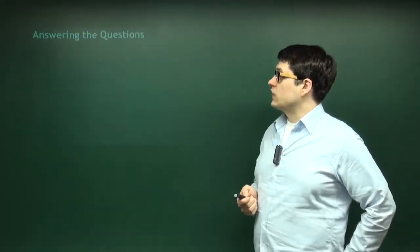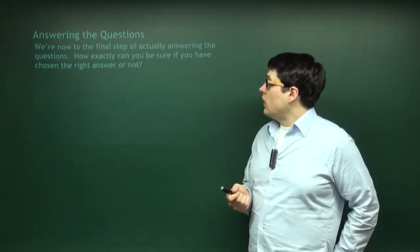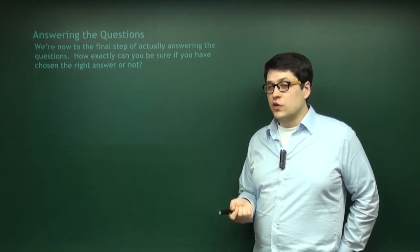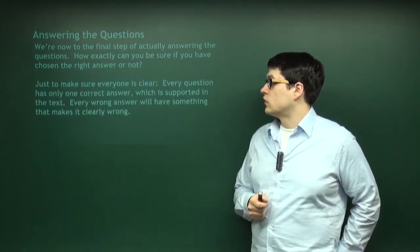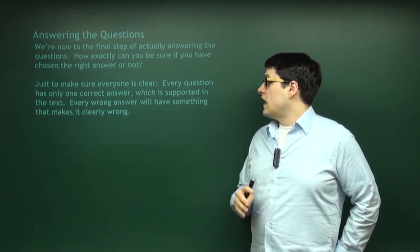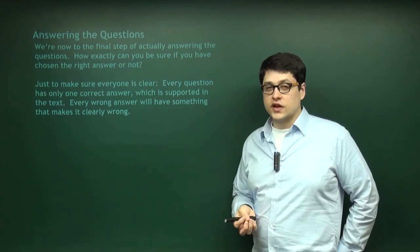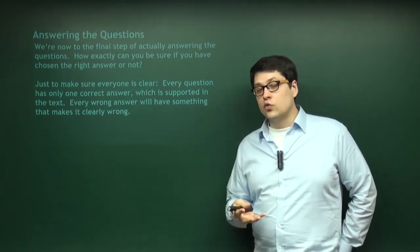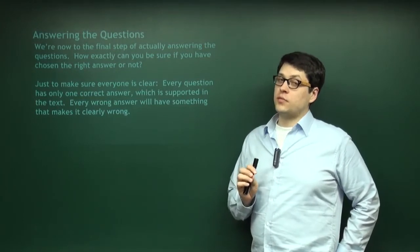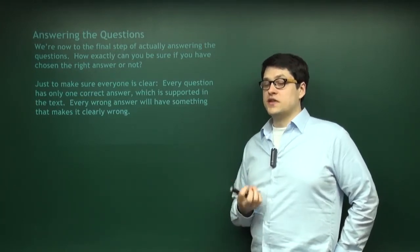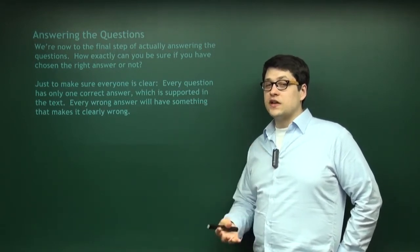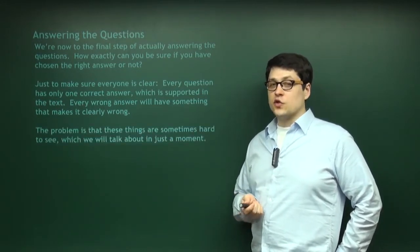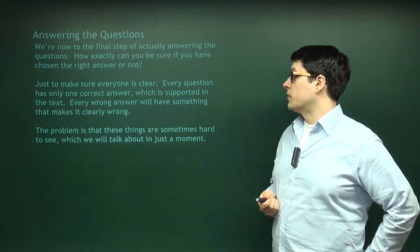Okay, the next step: actually answering the questions. How can you be sure if you've chosen the right answer? Every question has only one correct answer, and all wrong choices are provably wrong by something in the passage. Every right answer is provably right by something in the passage. It may not be immediately obvious, but there is an explanation for why every wrong answer is wrong and every right answer is right. It's just hard to see sometimes.